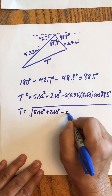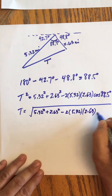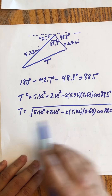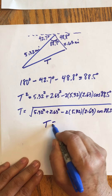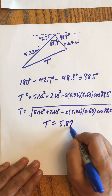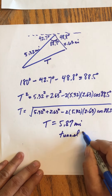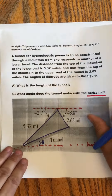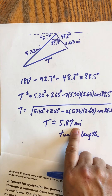Make sure your calculator is in degree mode since the angle is in degrees. When you compute it, you get t = 5.87 miles. So the length of the tunnel is 5.87 miles — that's part A.